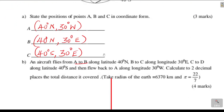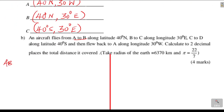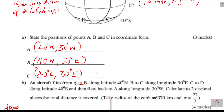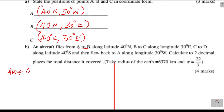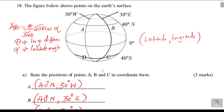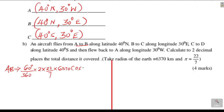For distance AB, the longitude difference: A is on longitude 30 degrees west, B is on 30 degrees east. When one place is to the east and the other to the west, we add — so the longitude difference is 30 plus 30 equals 60 degrees. Therefore: 60 over 360 times 2 pi R times cosine of 40 degrees, since both A and B lie on latitude 40 degrees north.